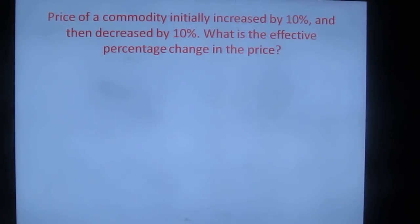The last question for this session: Price of a commodity initially increased by 10%, then decreased by 10%. What is the effective change in the price? As we saw in the previous slide, the first two lines are same. Let the initial price be 100, increased to 10% becomes 110. And please remember, now the price is going to decrease by 10%, it will not decrease from 100 because the new price is 110. It will decrease from 110.